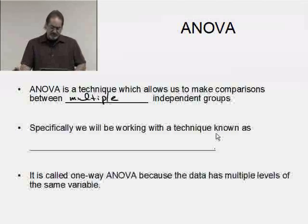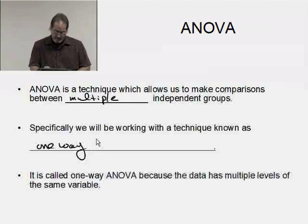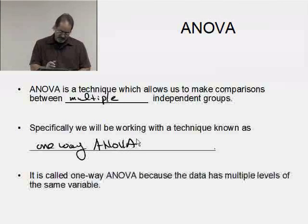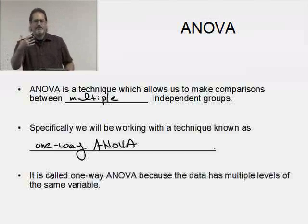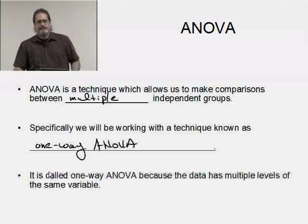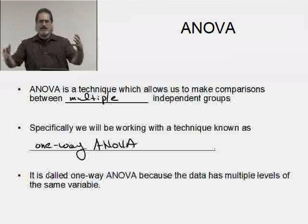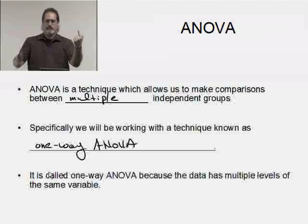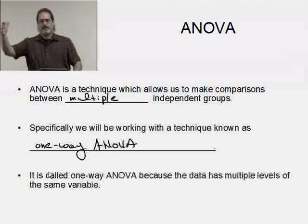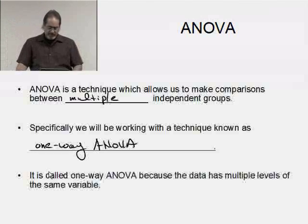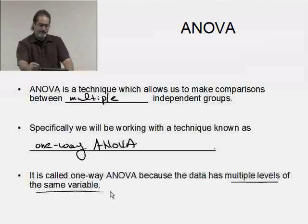Specifically, we're going to be working with this ANOVA technique known as one-way ANOVA. The one-way ANOVA technique simply says I have one variable with multiple levels. Maybe I have multiple classes, there's my multiple levels, and how they did on the same exam, there's my one variable. I can make a comparison with multiple classes, see if they all did essentially the same or if it looks like one class or another did better.